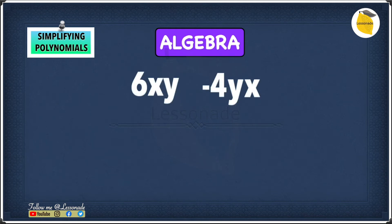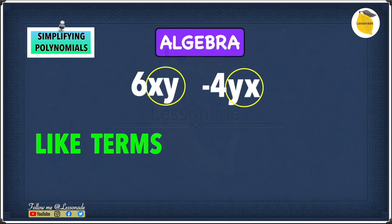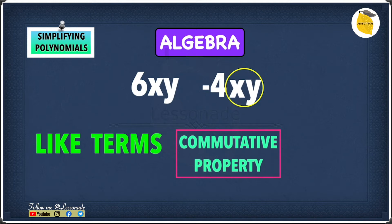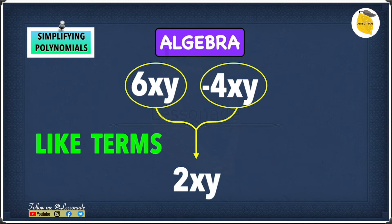What if we have 6xy and minus 4yx? Some of you may think these are not like terms, but they actually are. The first term's variable part is xy and the second is yx. Remember, xy is the same as x times y, and yx is the same as y times x. By the commutative property of multiplication, we can swap the order, so y times x equals x times y. This means we can combine these two terms: 6xy minus 4xy gives us 2xy.